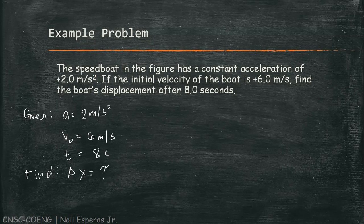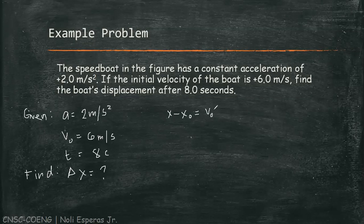Based on the given values and what we're looking for, we have to find which equation we should use. In this problem, we are going to use the third motion equation, which is x - x₀ = v₀t +